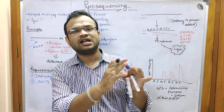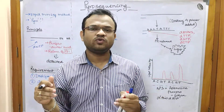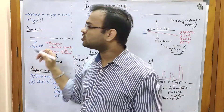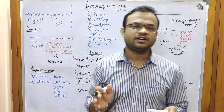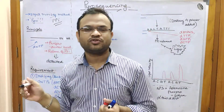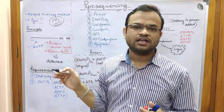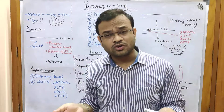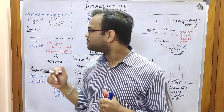Now why is this called pyrosequencing? Whenever you divide a biological word into its constituents, you automatically learn what it is saying. Pyro means pyrophosphate in PPi form — that means two phosphates linked together. Where do you get these pyrophosphates? We will study that in the upcoming principal portion. You just need to learn here that pyro comes from pyrophosphates.